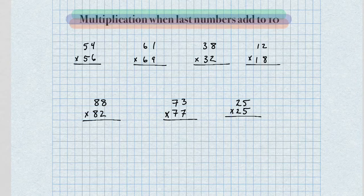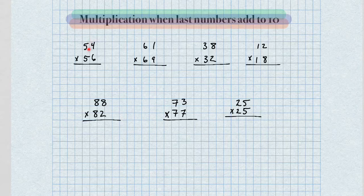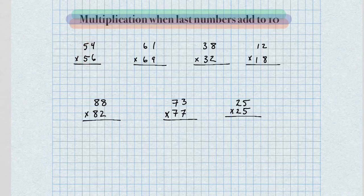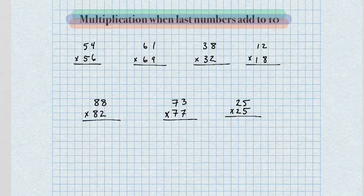Good day. I want to show you guys a trick using multiplication when the last numbers add up to 10 and the previous numbers are the same. So in other words, 4 and 6 here in the first problem add up to 10, and in the tens place we have the same number. You'll see that is common among all these problems — the last digits add up to 10 and the previous digits are the same number.